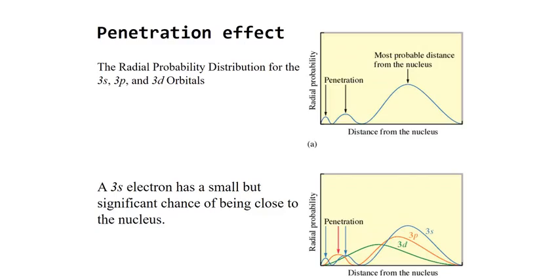Here is a graphic showing the radial probability distribution for 3S, 3P, and 3D orbitals. The most probable distance to the nucleus is that 90% region, but there is also a small percentage penetrating to shells 2 or 1. The 3S electron — shown in blue — has a small but significant chance of being close to the nucleus and can penetrate closer than 3P or 3D. The 3P also has potential to penetrate fairly close to the nucleus, but not as close as 3S. Technically 3S penetrates closest; that penetration effect gives it a more negative potential energy.